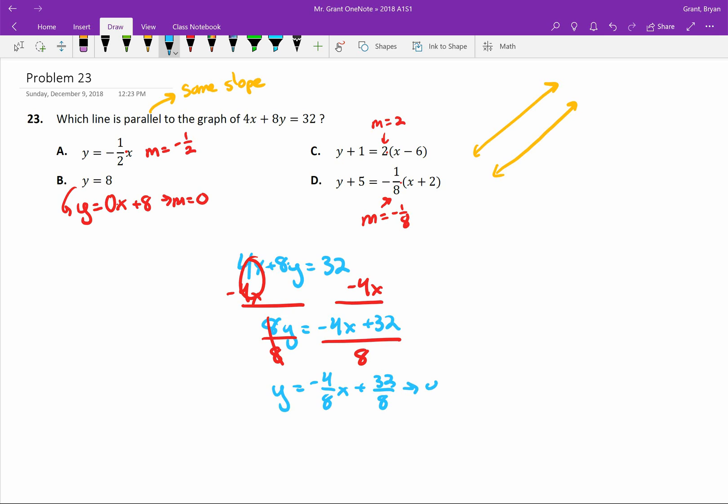So cleaning this up a little bit, negative 4 over 8 looks like a fraction. It is and we can reduce by dividing by 4. So if I divide the top and bottom by 4 I end up with negative 1 half x and 32 divided by 8 is 4.